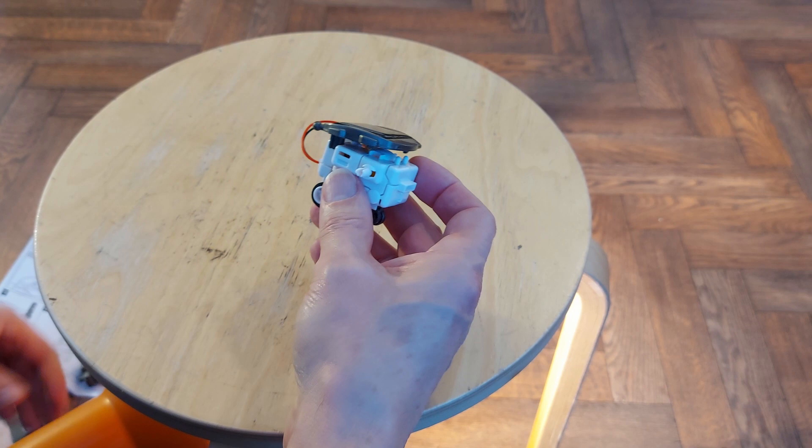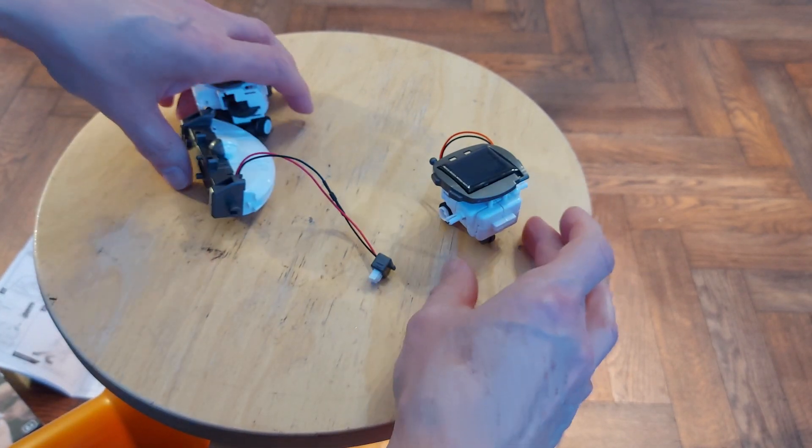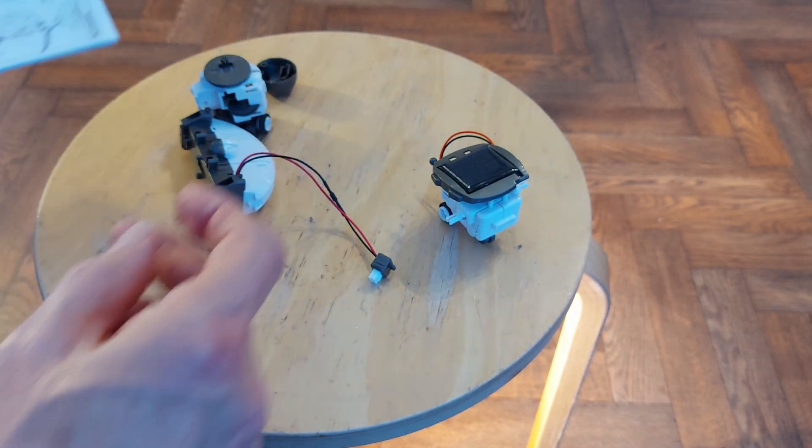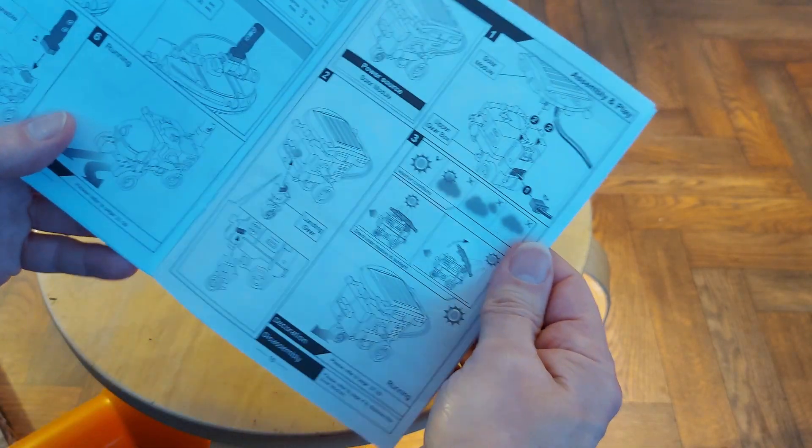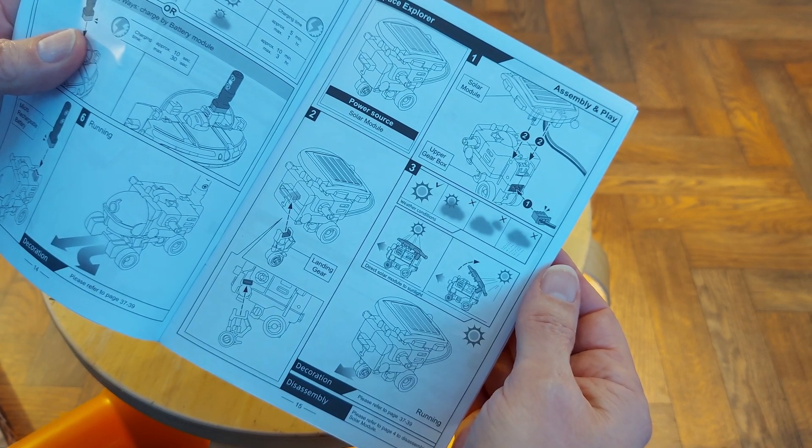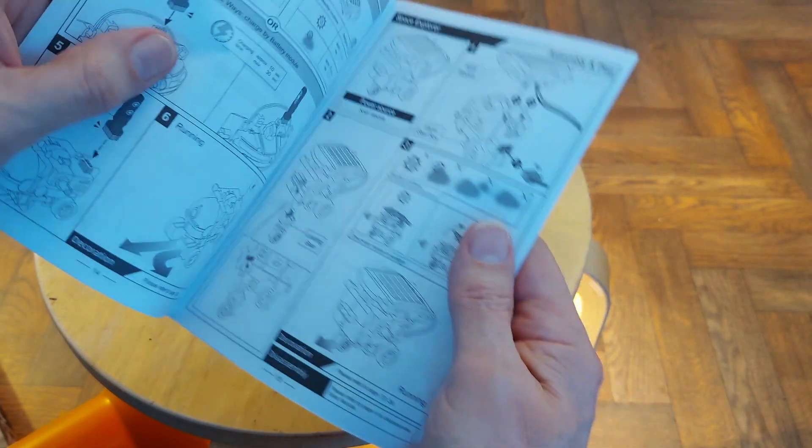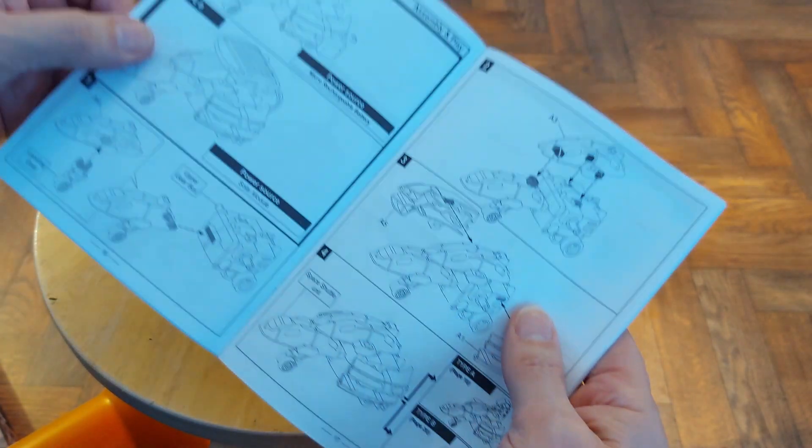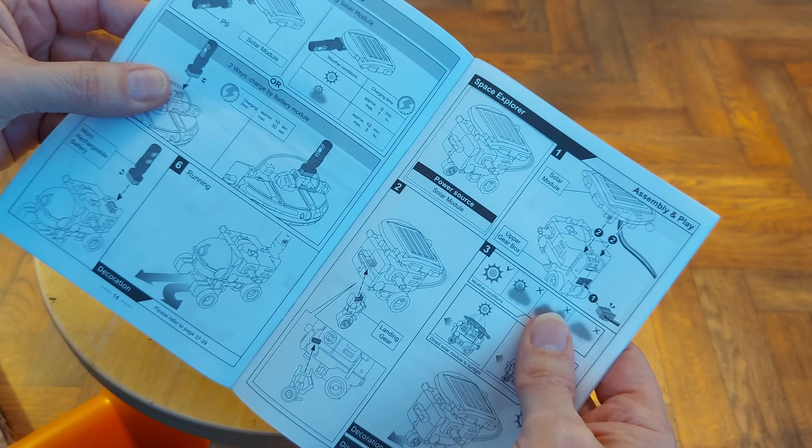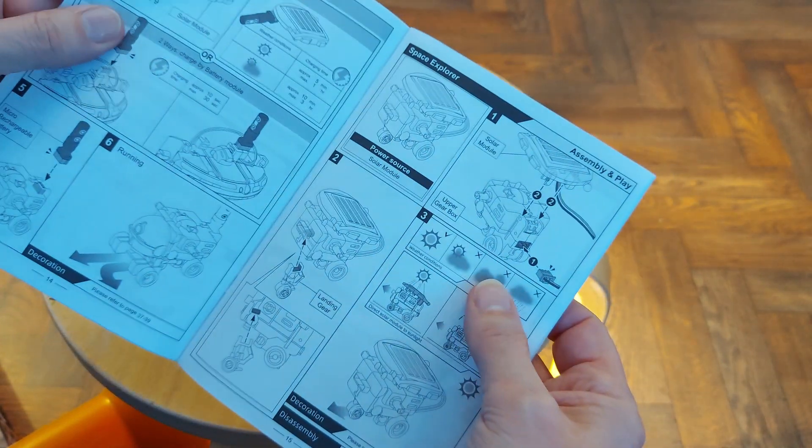I'll just check there's nothing else to do with it, but I think that's it. It's as simple as that. I suppose they're starting simple just to get you into the hang of things. So that was a very short video. Space Explorer - take the space rover apart and just stick the solar panel on top.